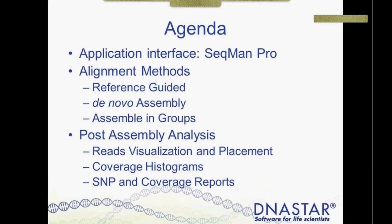Some of the topics I'll be covering today will be the actual application interface — I will go into the software and give you an overview. Then I will give you an example of three main alignments: reference guided, de novo assembly, and assembling groups. And then I will show you all the analysis tools in each of those assemblies. With that, I'll jump right into the software.